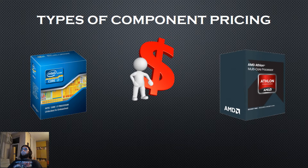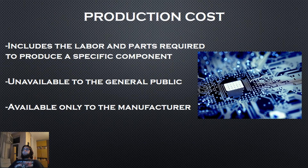Let's start with the types of component pricing. There are four major types: production cost, manufacturer pre-sale price, recommended selling price by the manufacturer, and store-determined selling price. The first type is production cost, which includes the components and labor required to produce a specific PC component. Getting a component at this price is basically impossible — only the manufacturer receives finished components at this price.